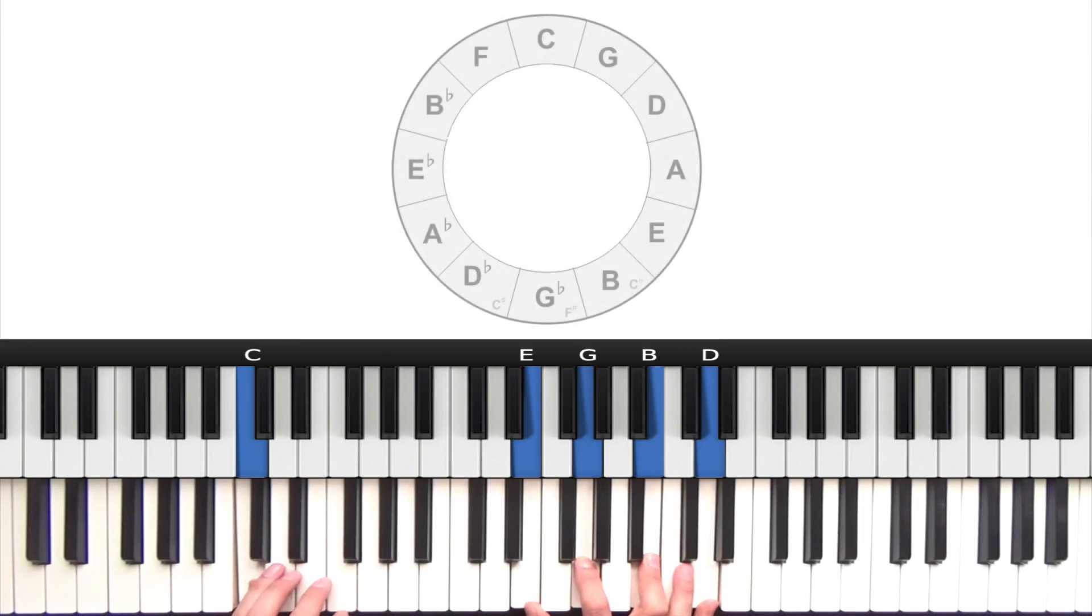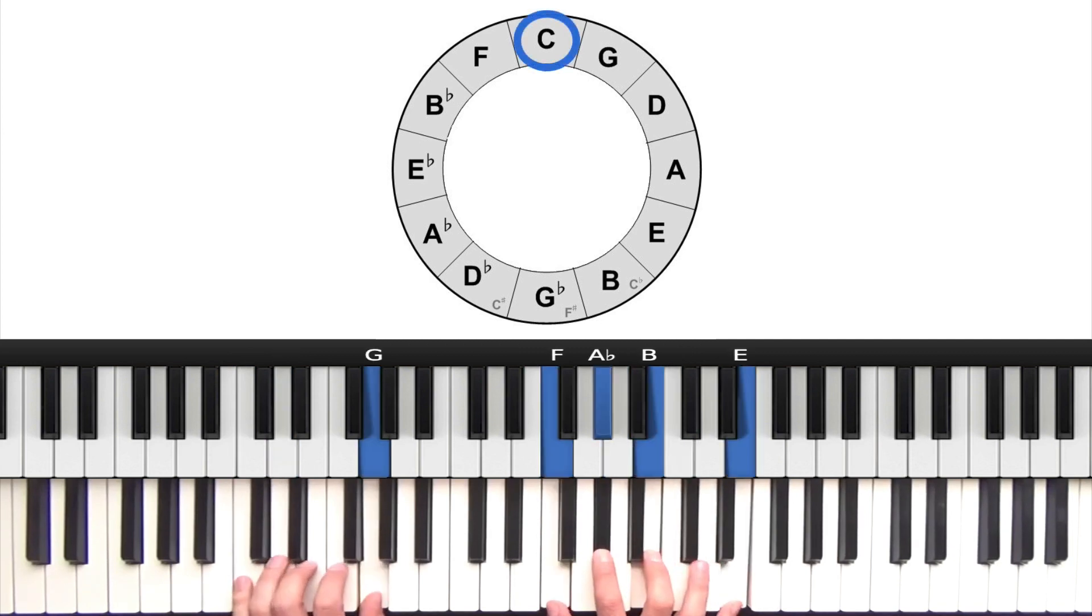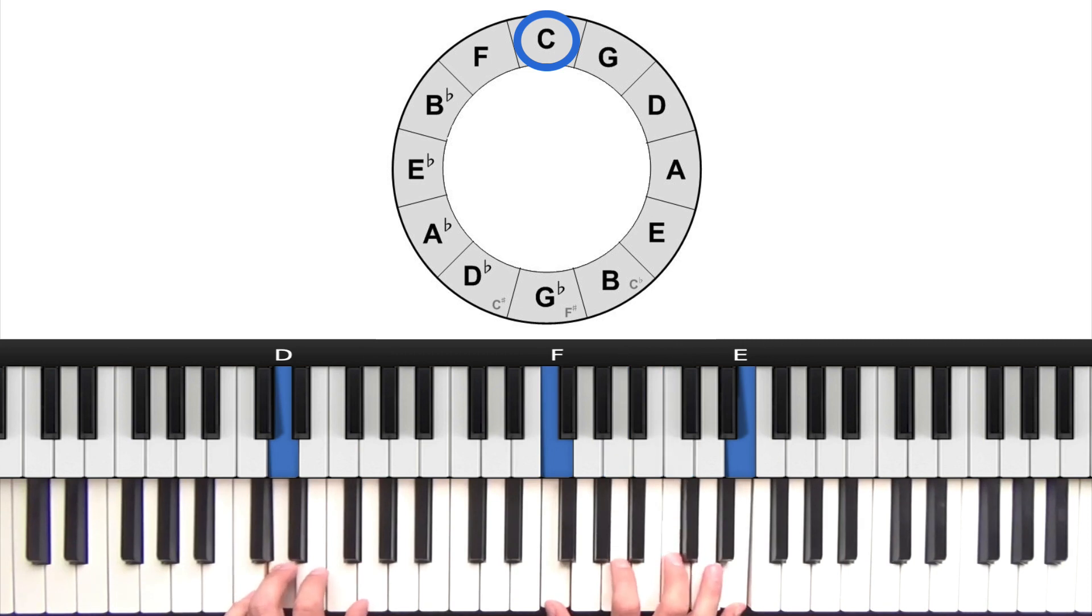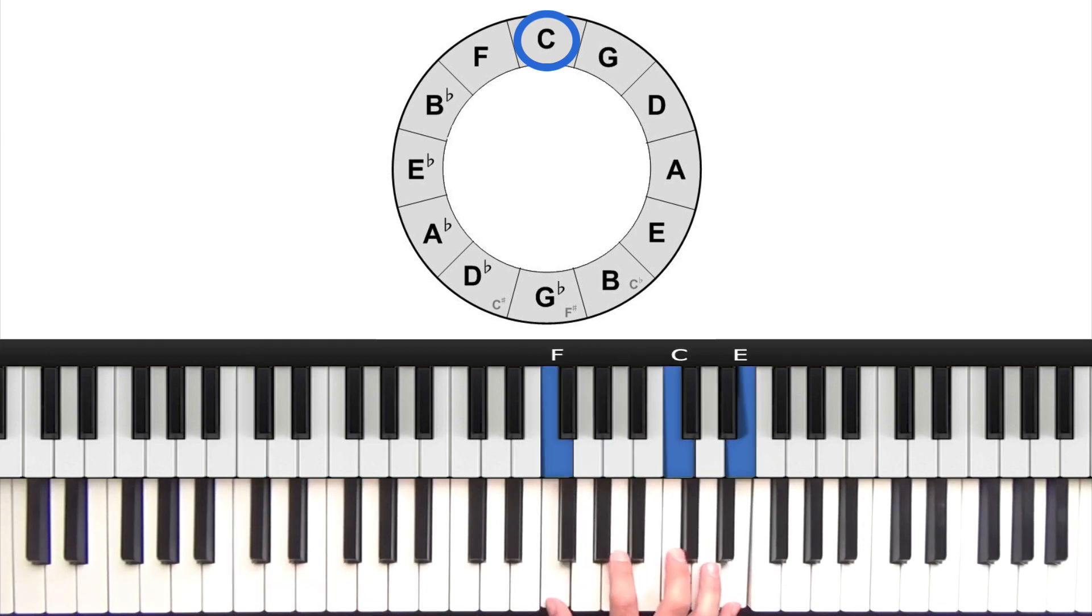So let's take this around all 12 keys starting with C major - 2, 5, 1. Just those two middle notes falling down by a half step and then into the 1. And that same pattern of the two middle notes falling is going to work in all 12 keys, as we'll see. So starting with a 2-5-1 in C major, now a 2-5-1 in F major.